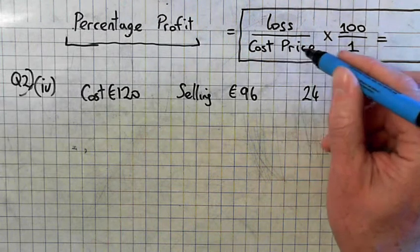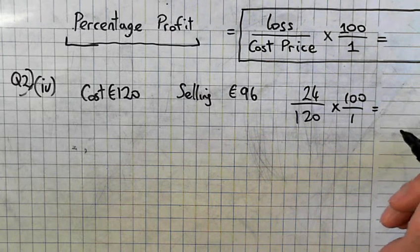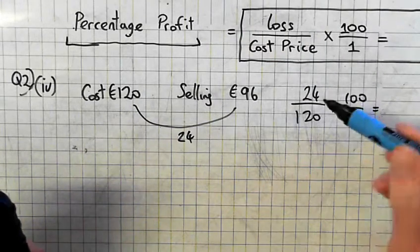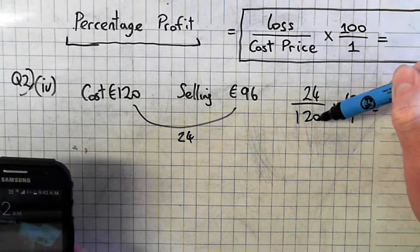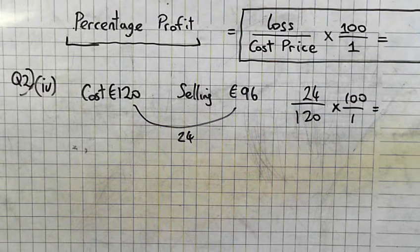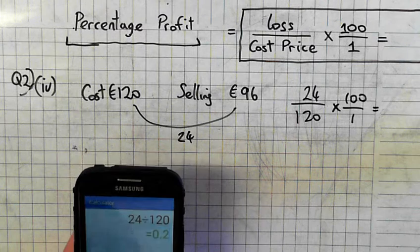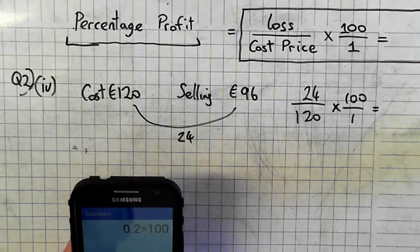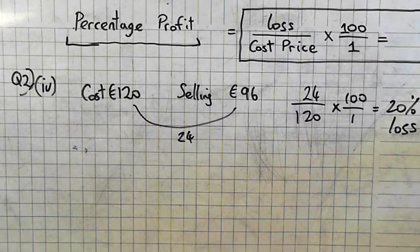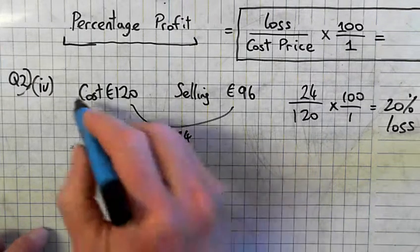So how do we calculate the loss? 24 is the loss over the cost price. 24 divided by 120 equals 0.2 times 100, which is 20%. 20% loss. So you have to state that, whether it's a profit or a loss.